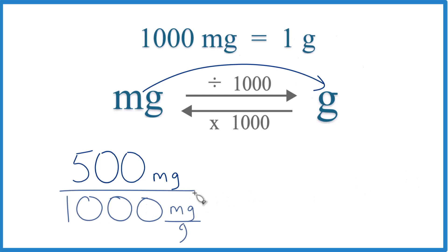like this. So essentially, we're dividing 500 by 1,000. And you can already see that the answer is going to be 0.5. It's going to be one-half of a gram.